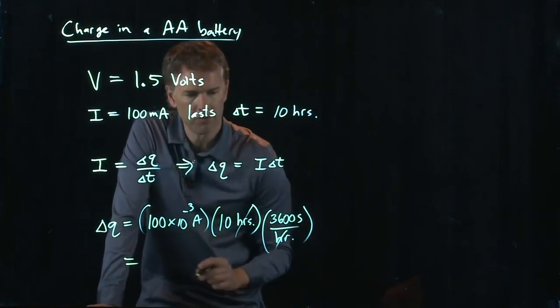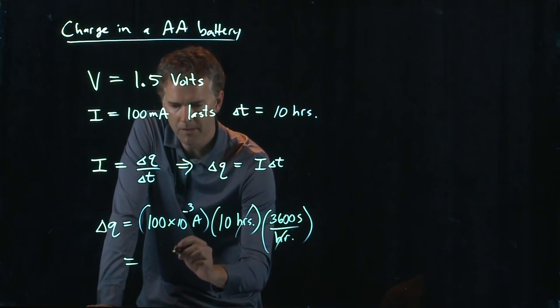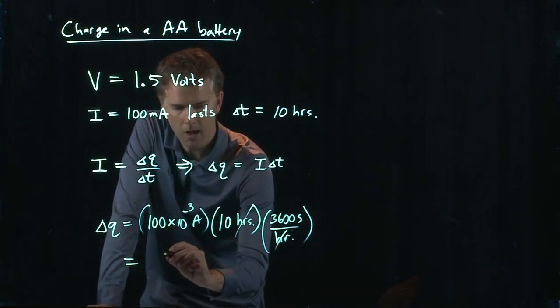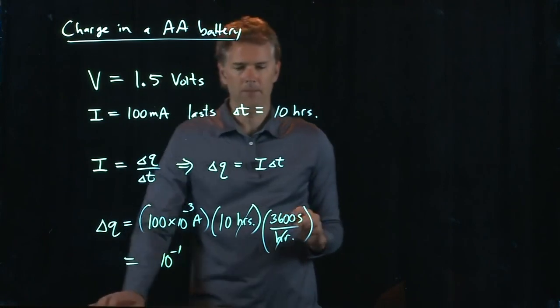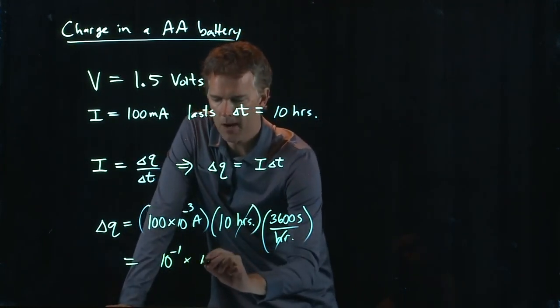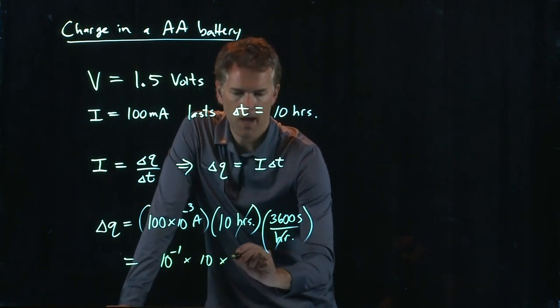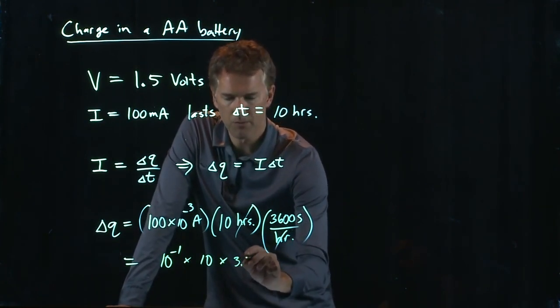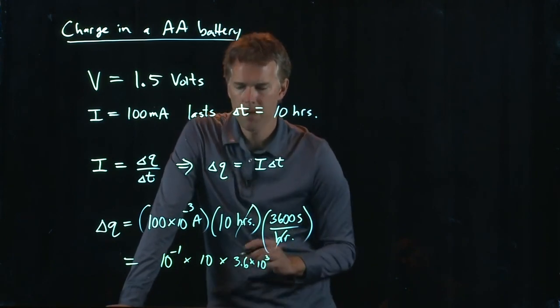And let's run those numbers and see what we get. So 100 times 10 to the minus 3 is the same as 10 to the minus 1. And then we have a 10 from the 10 hours. And then we have 3,600, which is 3.6 times 10 to the 3.